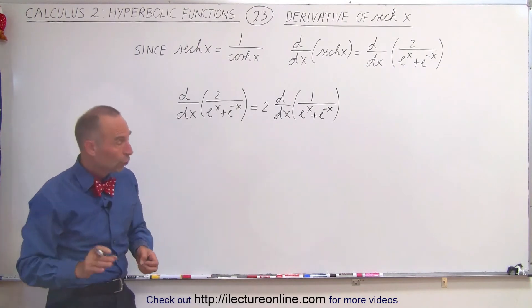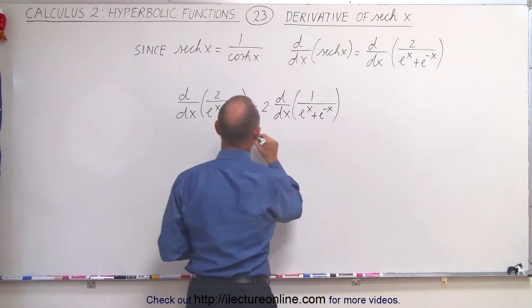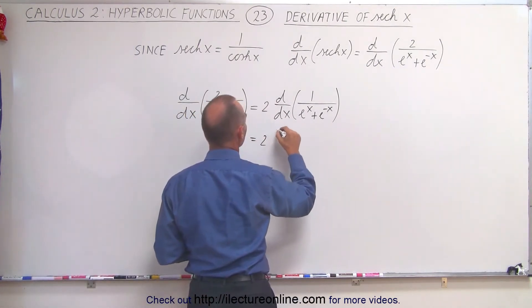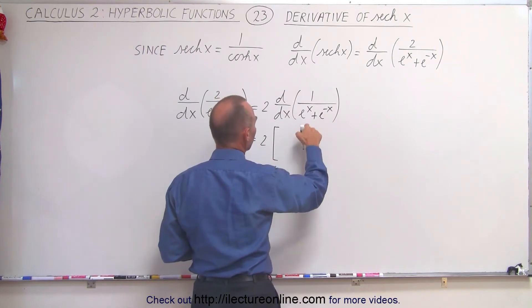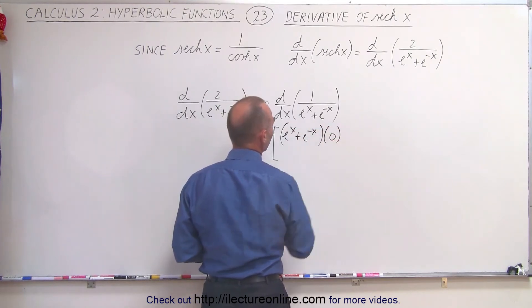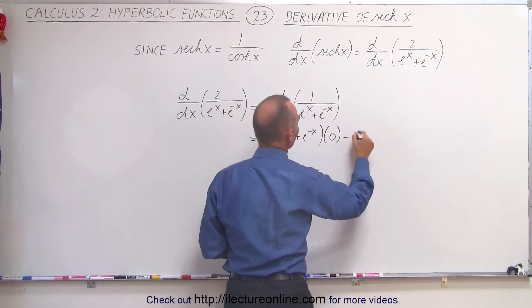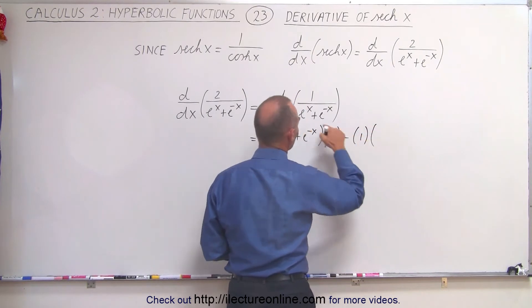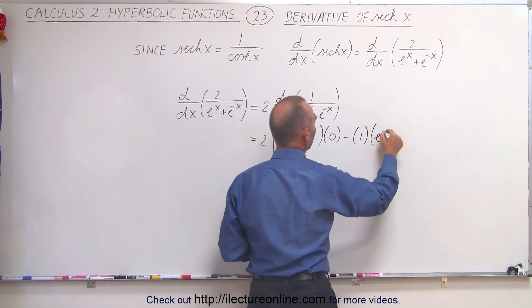So here we're going to use the quotient rule. This becomes equal to 2 times the denominator, e to the x plus e to the minus x, times the derivative of the numerator, which will be 0, minus the numerator times the derivative of the denominator, which is e to the x.